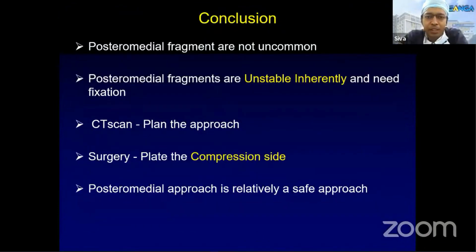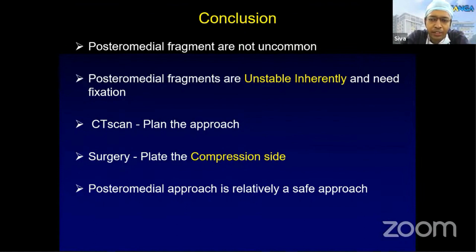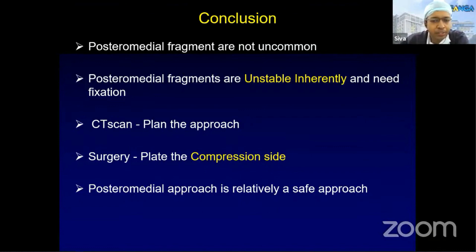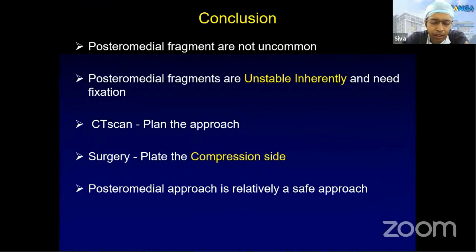In conclusion, posteromedial fragments are not uncommon — literature suggests almost one third of all bicondylar tibia fractures have a posteromedial component. They are inherently unstable, need fixation, and can get loaded in various knee flexion positions. Always get a proper CT scan and plan the approach carefully. Wherever you want to put your thumb to reduce the fracture, place the plate there — ideally on the compression side. The posteromedial approach is relatively safe, keeps you away from vessels, provides direct visualization for reduction and compression, and is biomechanically stable.